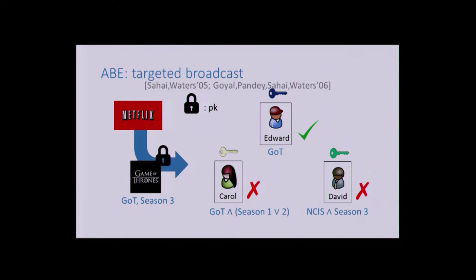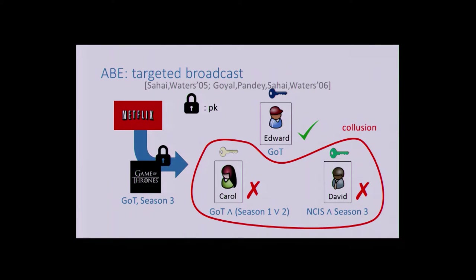Only the user should get access to the encrypted data they paid for, and only that. To achieve this, we give each user a secret key. The secret keys are different for every user and depend on the package. We can specify any access policy in the secret key—it's a generalization of public key encryption. An important security requirement is security against collusion of users: if users join their secret keys, they should not learn anything more than what they individually know. Carol and David should learn nothing by combining their secret keys.